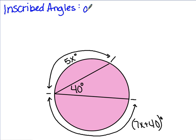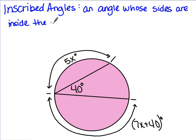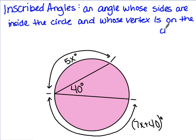It's an angle, you'll see an example of this in the circle, whose sides are inside the circle. That's where we get inscribed, it's written inside. And whose vertex is on the circle. You'll see an example of this in the diagram below.